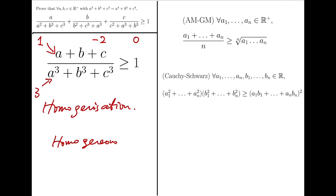Looking back at the tools we have: the left-hand side of the AM-GM statement has degree 1, and that for the right-hand side is 1 times n divided by n, which equals 1. As for the Cauchy-Schwarz inequality, the degree for the polynomial at the left-hand side is 2 plus 2 which is 4, and that at the right-hand side is 2 times 2 which is also 4. So the theorems we are using are homogenized, while the inequality we are supposed to prove is not. It might be a good idea to first homogenize the inequality before moving on.